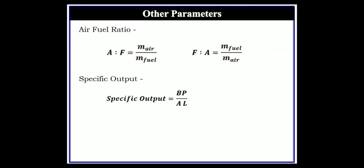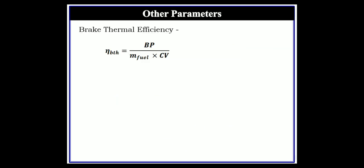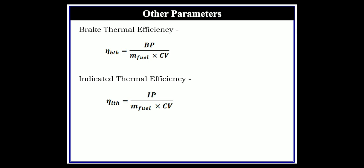Specific output is brake power per unit swept volume, where swept volume equals cross-sectional area A multiplied by stroke length. Mechanical efficiency equals brake power divided by indicated power. Brake thermal efficiency equals brake power divided by total heat generated, which is mass of fuel multiplied by calorific value. Indicated thermal efficiency equals indicated power divided by mass of fuel multiplied by calorific value.